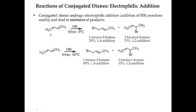If I take this 1,3-butadiene, which is this conjugated diene, and treat it with HBr at zero degrees — low temperature — I get two products: the 1,2 product and the 1,4 product. If I run the same reaction at 40 degrees Celsius, I still get a mixture, but the 1,4 product is present in higher yield. At 0°C, the 1,2 product is 71% and the 1,4 product is 29%. At 40°C, it's 15% for the 1,2 and 85% for the 1,4 product.